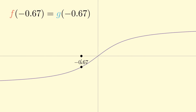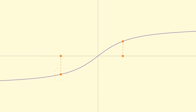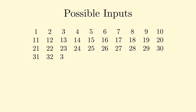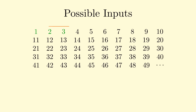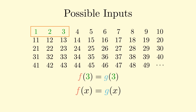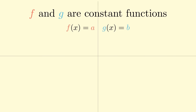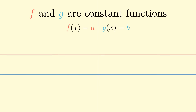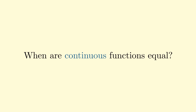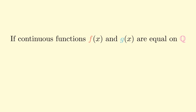Proving that two functions are equal can be quite a cumbersome task — you have to show that no matter what input you plug in, they always give the same output. This can be quite difficult, especially with an infinite number of inputs. Wouldn't it be nice if we only had to check a small subset of all possible inputs? Here's an example: if f and g are constant functions, meaning f of x equals a and g of x equals b, their graphs are horizontal lines — if they're equal at one point, they must be equal everywhere.